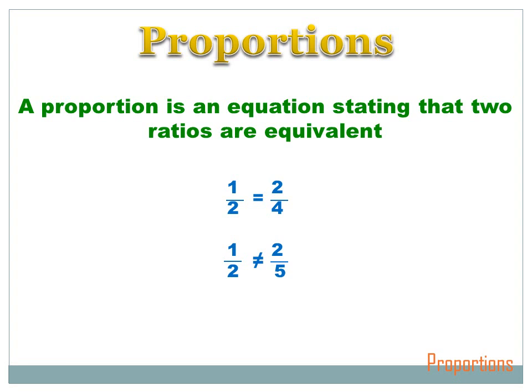In math, a proportion is an equation stating that two ratios are equivalent. One half equals two over four — we know that's true. We can also see that they grew proportionately: the numerator grew proportionately from fraction one to fraction two, and the denominator grew proportionately as well. If I double the numerator in the first fraction, I get two. If I double the denominator in the first fraction, I get four. So they've grown proportionately.